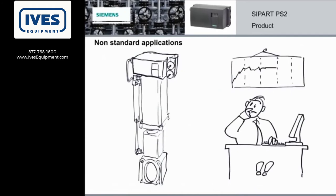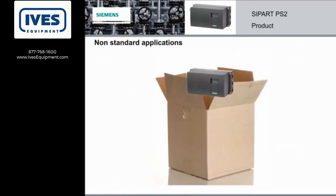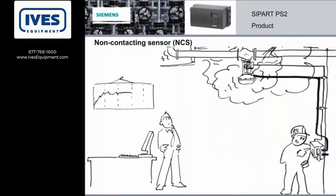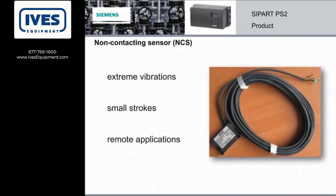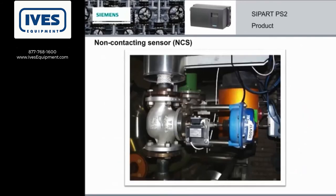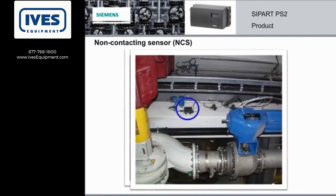For tricky, non-standard applications, the PS2 offers out-of-the-box thinking. The CPART PS2 also has a non-contacting sensor. This works well in applications with extreme vibration or small strokes — basically wherever remote applications are necessary. The NCS sensor can be mounted with a magnet onto the spindle of linear actuators, or onto the shaft butt of a part-turn actuator. The positioner can then be mounted safely away from your application.